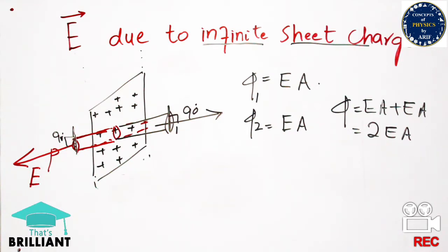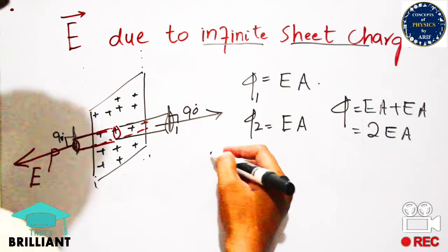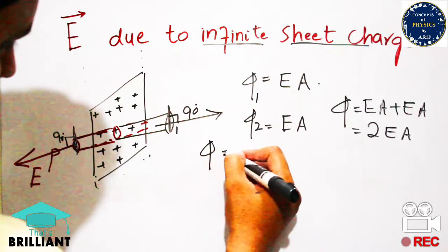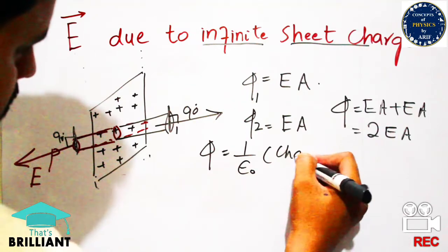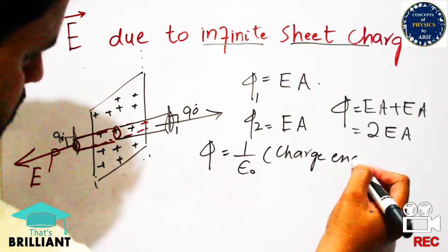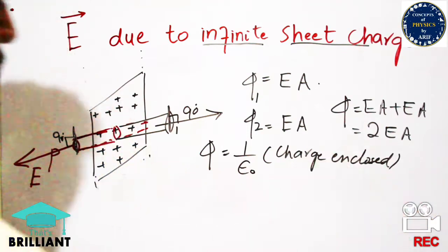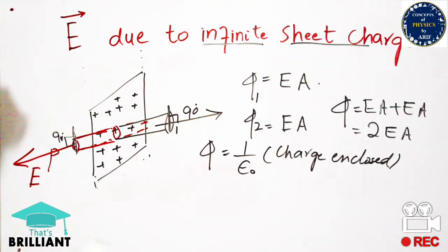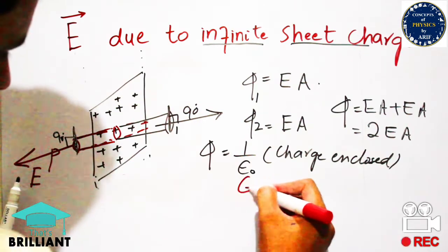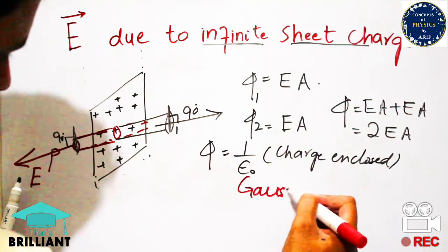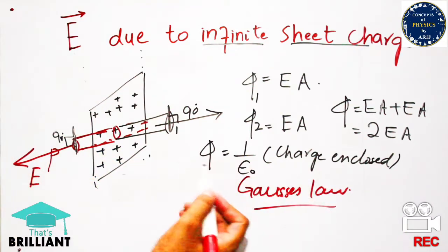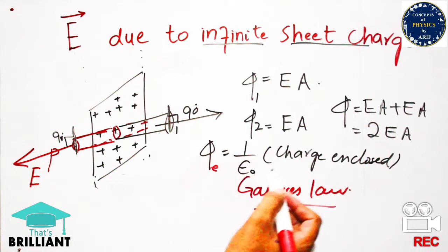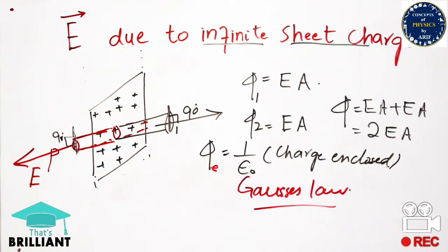Furthermore, we know Gauss's law, which states that the electric flux is equal to 1 over epsilon-naught times the total charge enclosed in that closed surface or Gaussian surface. This is the statement of Gauss's law. This law is very helpful for all static charge problems in which a Gaussian surface or closed surface needs to be drawn.